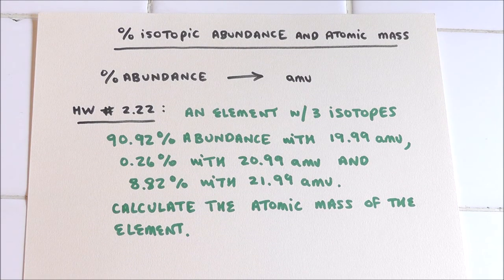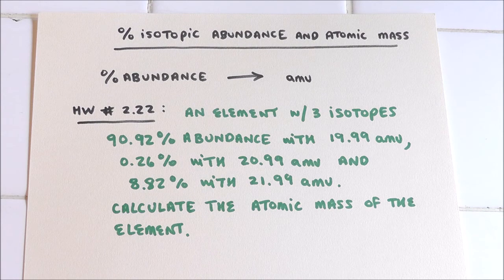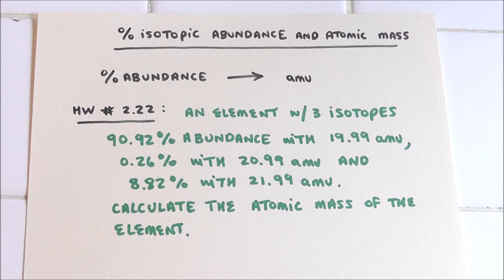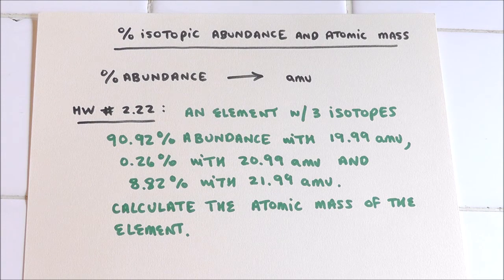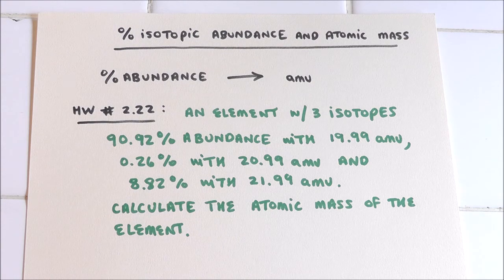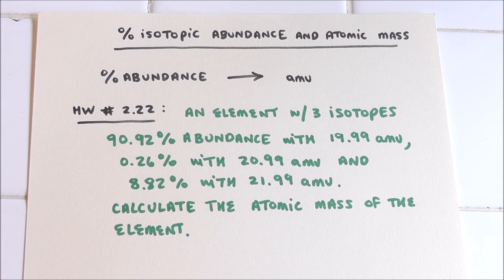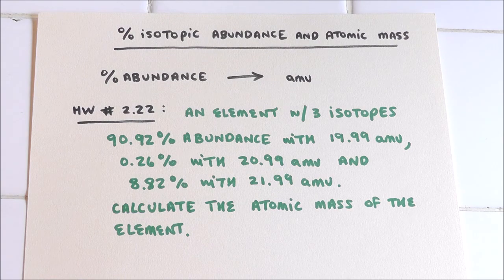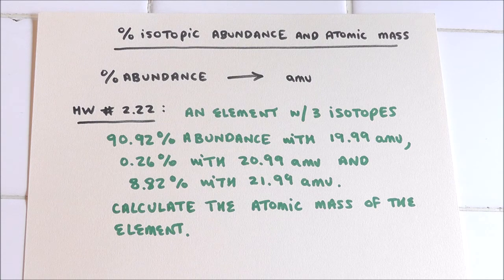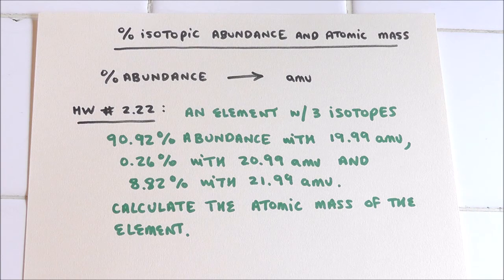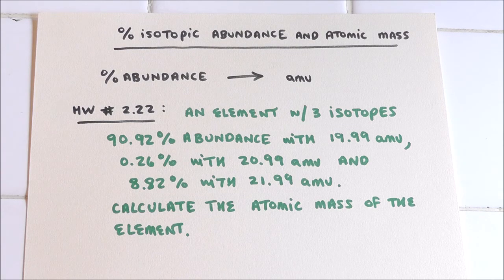Greetings, everybody. Today we're going to talk about percent abundance of each isotope. We talked about isotopes last time and its relation to the weighted average, which is the atomic mass of an element. So here's, we're going to do two problems today. Here's one where they give you the percent abundances and the masses of each isotope.